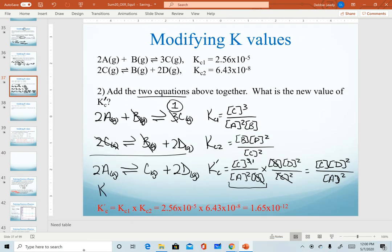And so when we add two equations together, we multiply the two K values to get our new one. And so that work is shown down here. When we multiply these together, we get a final value of 1.65 times 10 to the minus 12.